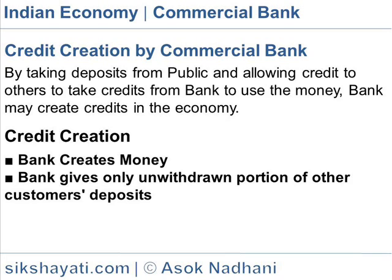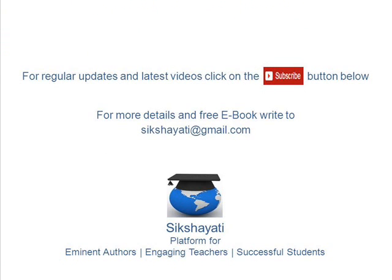The alternative view is that a bank gives only the unwithdrawn portion of other customers' deposits. As per this view, a bank lends only when it has money in cash and therefore it has no capacity to create money. However, on deeper analysis, it can be said that both views contain some element of truth, but neither is fully right.